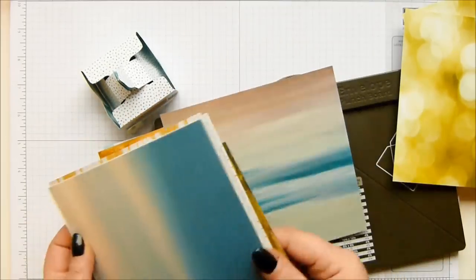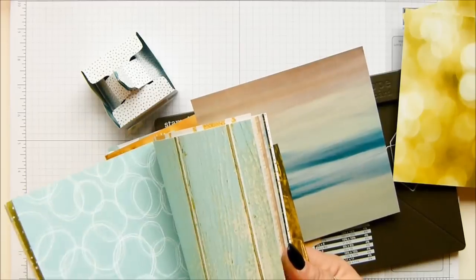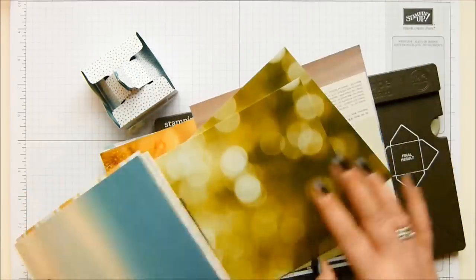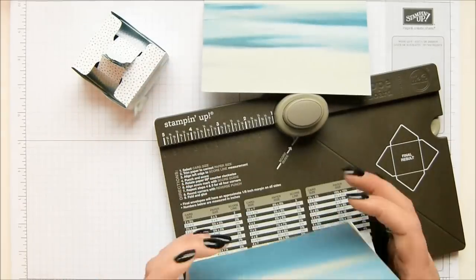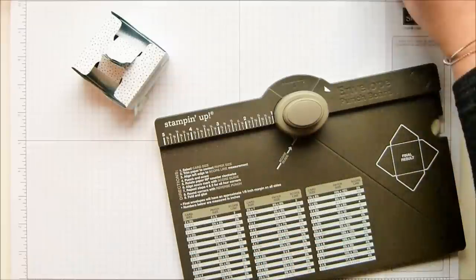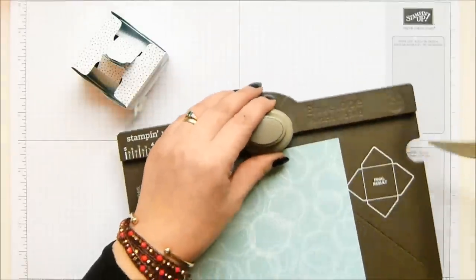So this first one, I can't remember what's on the other side of that. I think it was sort of like a sea scenery but love it. So you need a piece of paper 6x6 inches, 15 and a quarter by 15 and a quarter and you need your envelope punch board.